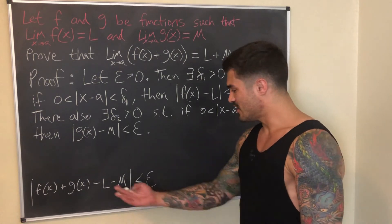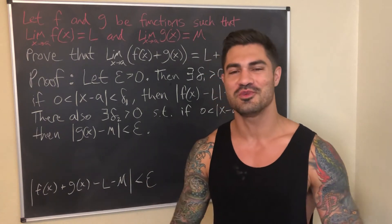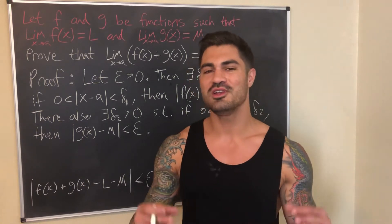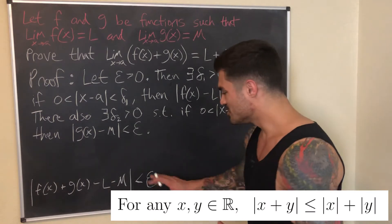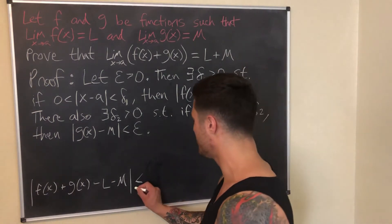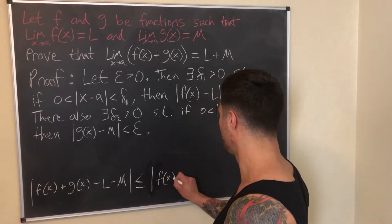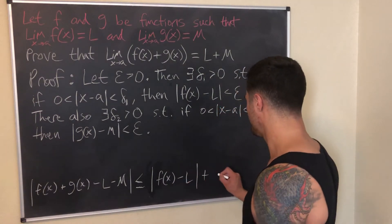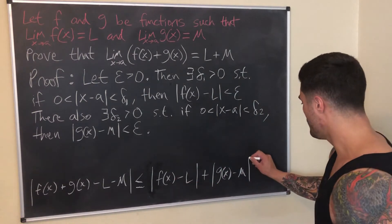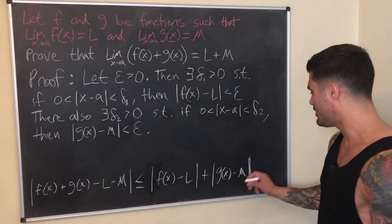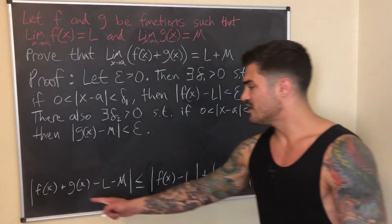Working backwards, I'm about to use something really useful in real analysis that comes up over and over: the triangle inequality. I can separate this expression using the triangle inequality: |f(x) + g(x) − L − M| ≤ |f(x) − L| + |g(x) − M|. We know each of these is less than Epsilon, so the whole thing is less than Epsilon + Epsilon, which is 2·Epsilon.